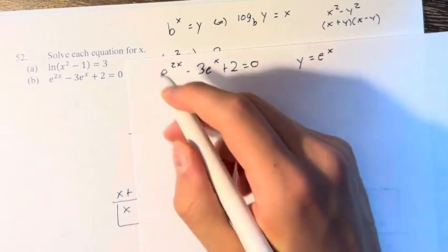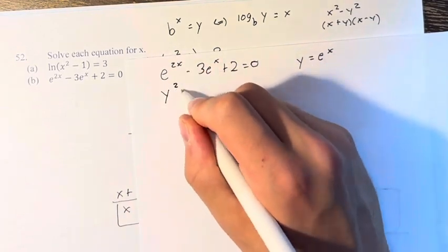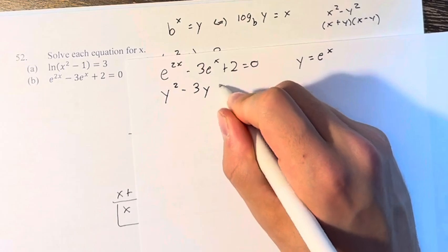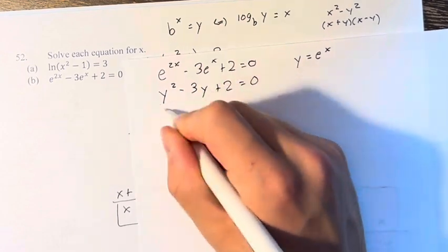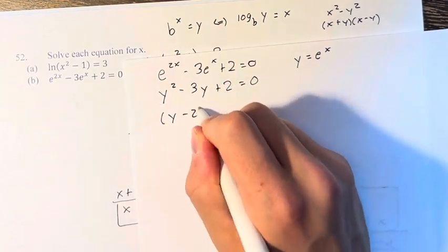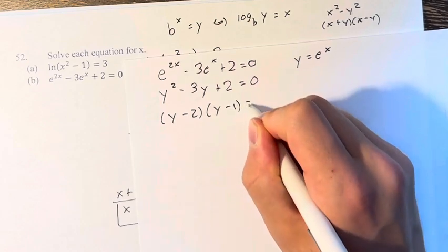then e to the 2x is y squared. e to the x is just y plus 2. And now we can just solve this quadratic. y minus 2, y minus 1 equals 0.